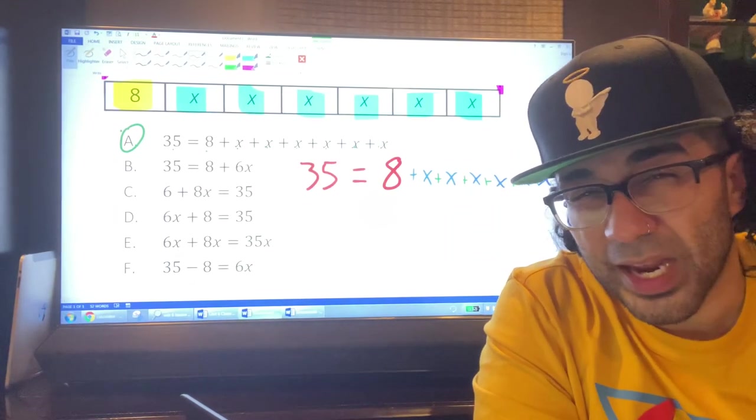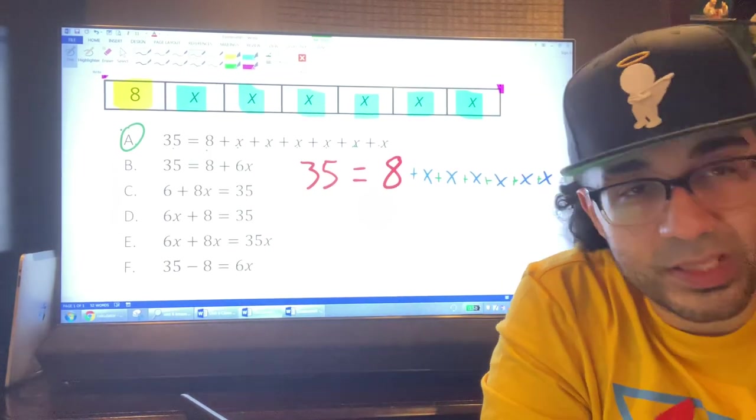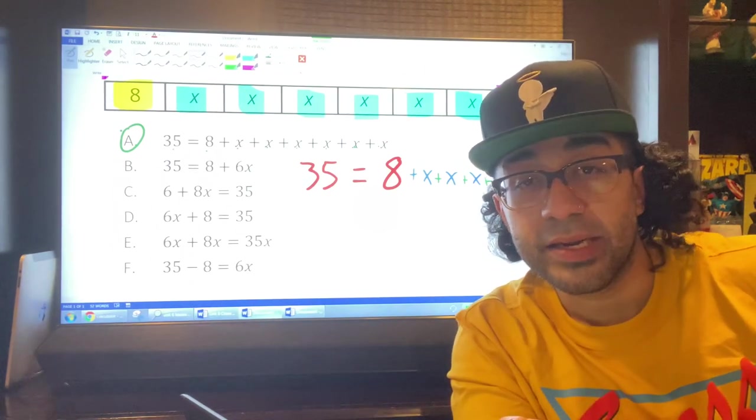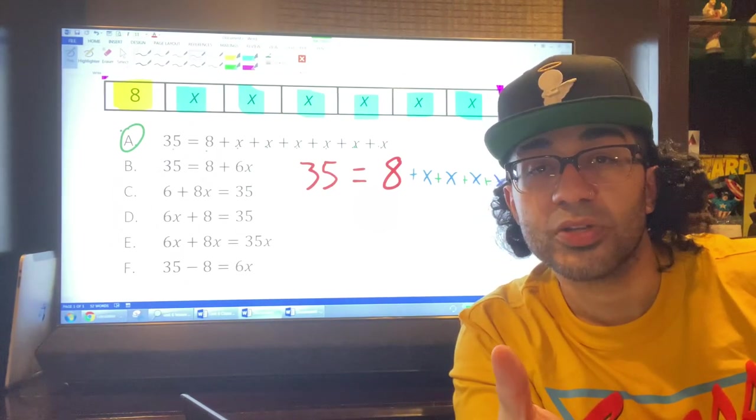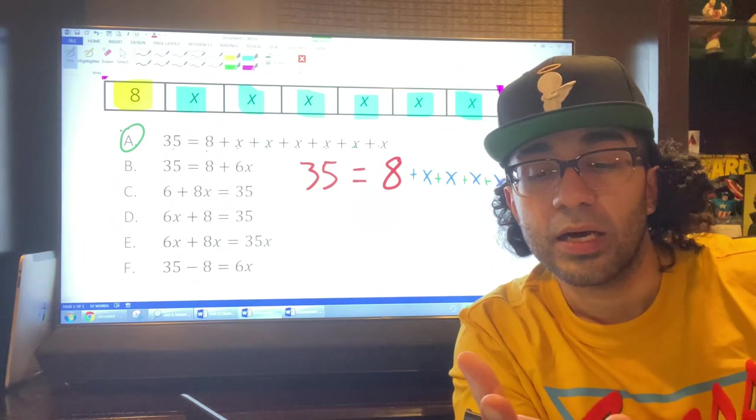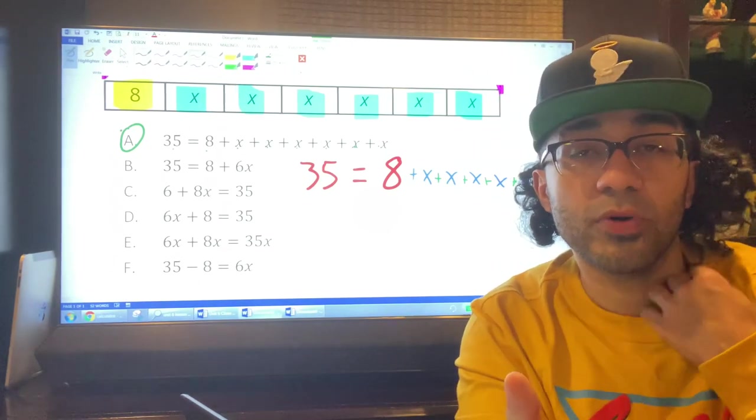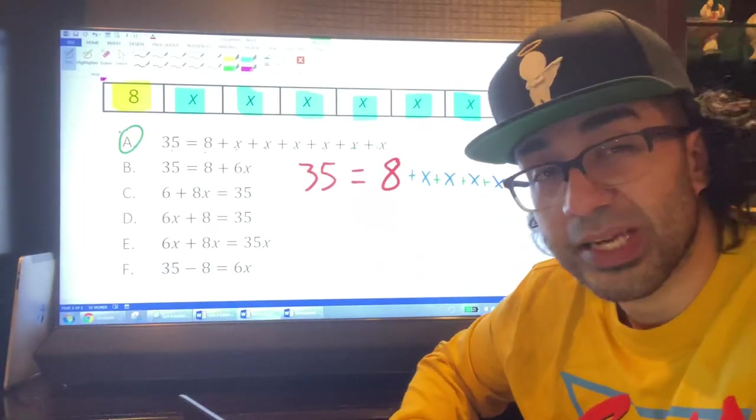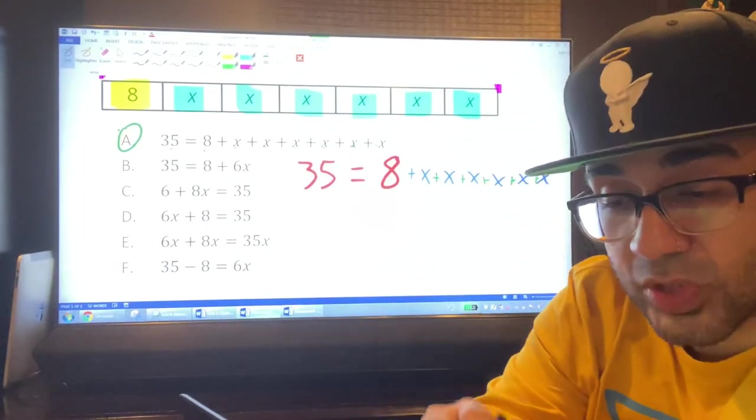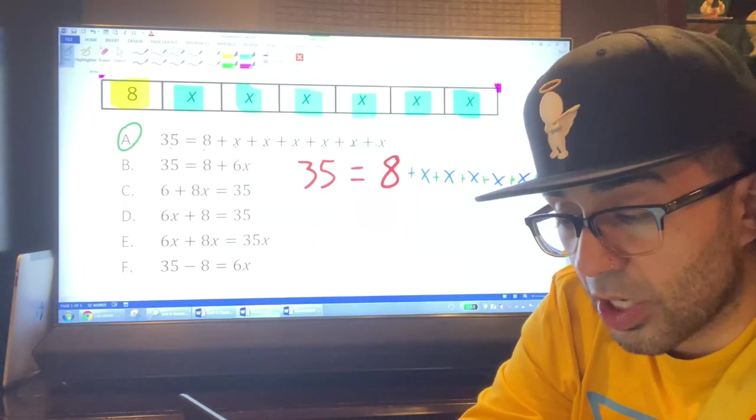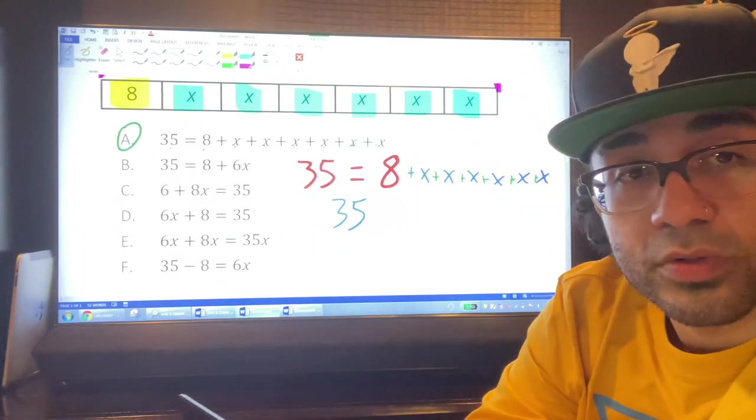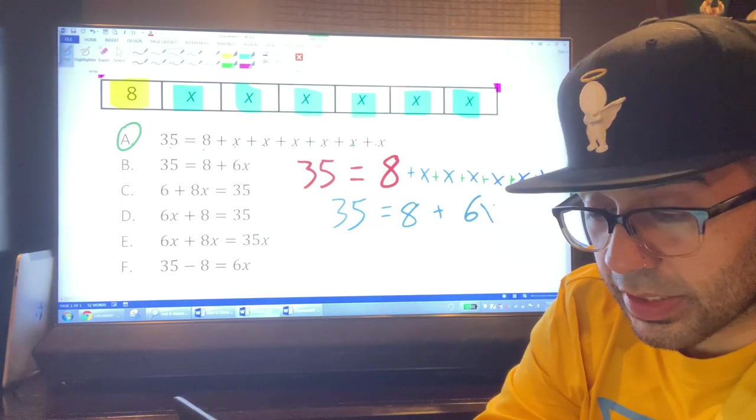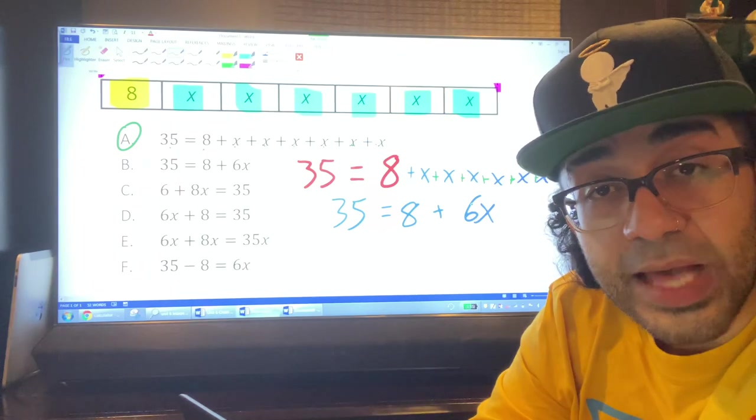This goes out to my eighth graders too. This is taught at the end of seventh grade, but it's a big eighth grade standard as well. Can we combine any like terms? A like term is a term that has a consistent variable and or exponent. There's no exponents here, just X. How many times did we see X? We saw X six times. So if we wanted to simplify terms, we could write this as 35 equals 8 plus 6X. And what do you know, that matches B.